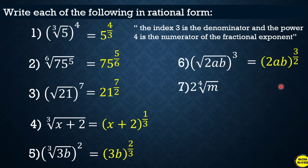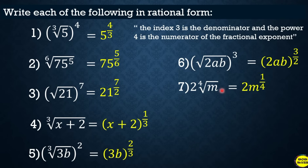Another example: 2 times the fourth root of m. The 2 is outside and is not part of the radical. Only m is rewritten in rational form. Since there is no written exponent, it is understood to be 1 — making the numerator 1. The index is 4, making the denominator 4. The answer is 2 times m raised to 1 over 4.